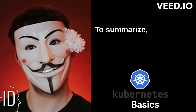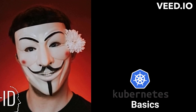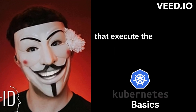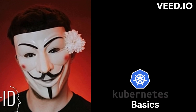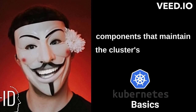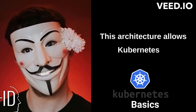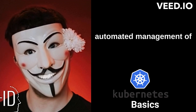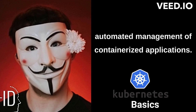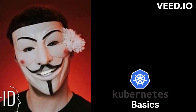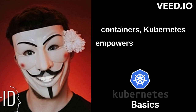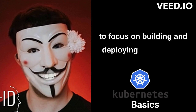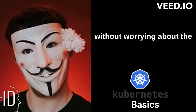To summarize, Kubernetes architecture consists of the master node, which manages the cluster, the worker nodes that execute the tasks, and the control plane components that maintain the cluster's desired state. This architecture allows Kubernetes to provide scalability, fault tolerance, and automated management of containerized applications. By abstracting away the complexities of managing containers, Kubernetes empowers developers and system administrators to focus on building and deploying applications without worrying about the underlying infrastructure.